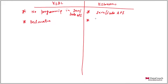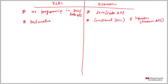In KStreams you have the functional API, which is a DSL — Domain Specific Language — and you also have an imperative programming interface called the Processor API, which is a lower-level API. The functional DSL is the higher-level API. So in KStreams we have two programming models: functional and imperative. In KSQL we have a declarative programming model, like SQL.